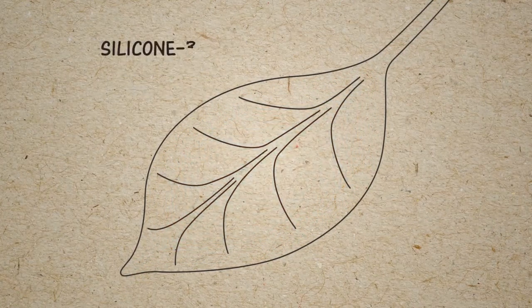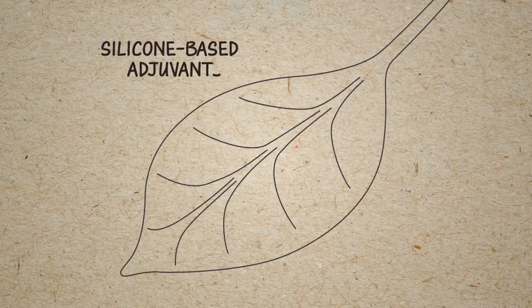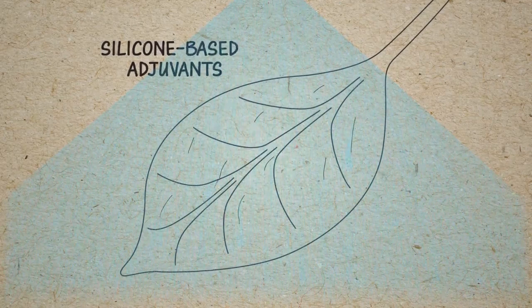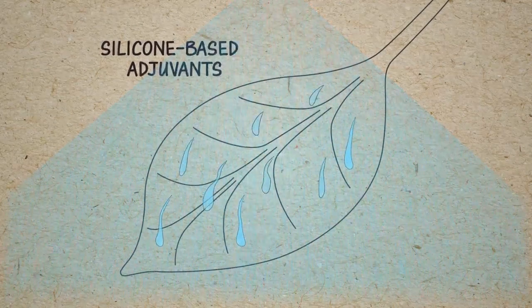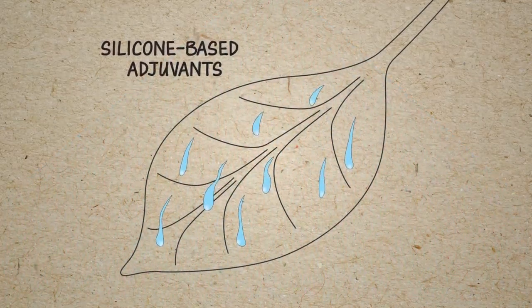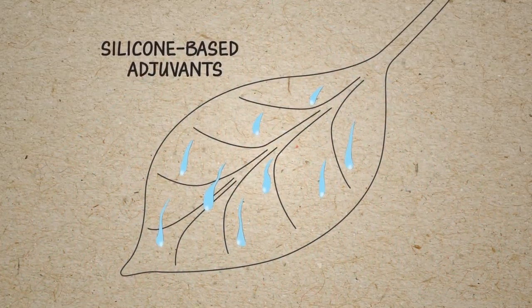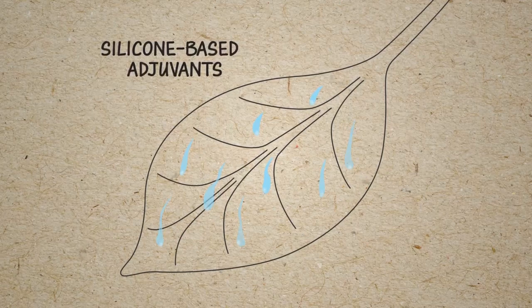Silicone-based adjuvants greatly reduce the surface tension of the spray solution to give excellent spreading on the leaf surface with no leaf penetration.